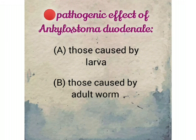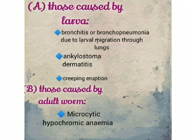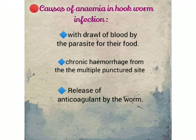Pathogenic effects of Ankylostoma duodenale: those caused by larvae include bronchitis and bronchopneumonia due to larval migration through the lungs, ankylostoma dermatitis, and creeping eruption. Those caused by adult worms include microcytic hypochromic anemia. Causes of anemia in hookworm infection: withdrawal of blood by the parasite, chronic hemorrhage from multiple puncture sites, and release of anticoagulant by the worm.